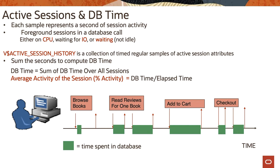In database time, each sample represents a second of session activity. Foreground sessions in a database call are either on CPU, waiting for IO, or waiting for any non-idle waits. There is a view V$ACTIVE_SESSION_HISTORY, and this view holds a collection of timed regular samples of active session attributes. Sum the seconds to compute total database time. DB time is the sum of DB time over all the sessions.